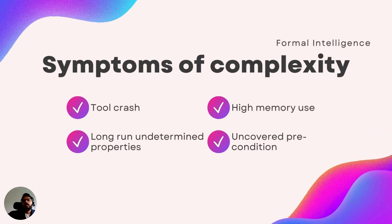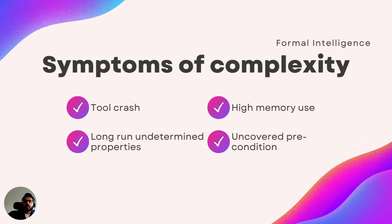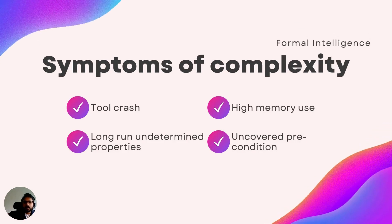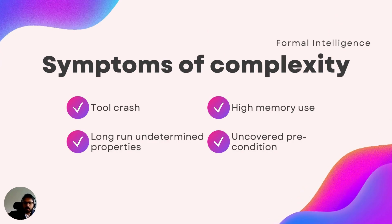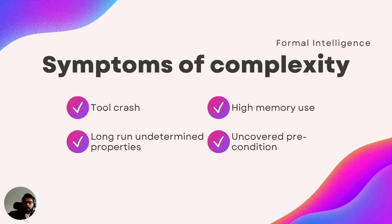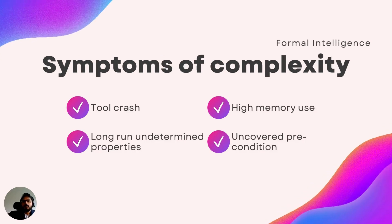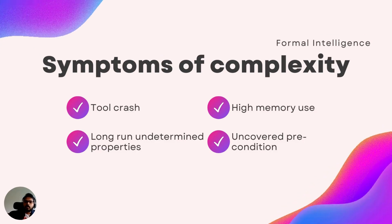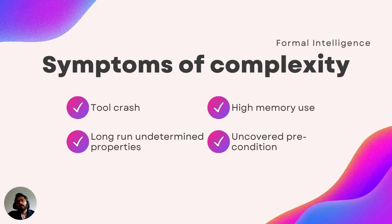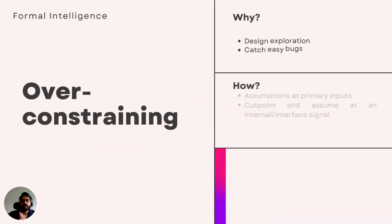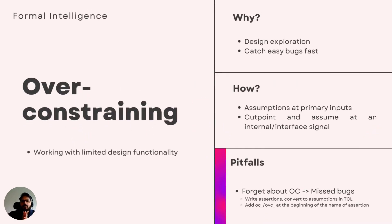It's up to you to decide how you want to reduce the complexity of the design and use the resources — licenses and computing memory available — efficiently, so that you can go to deeper bounds and uncover more bugs. That's why you need to know how you can reduce the complexity of the design you're working on. Let's jump into the key topic of the day: over-constraining.